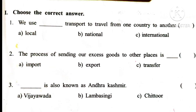Assessment 8, Roman number 1: Choose the correct answer. Question number 1: We use dash transport to travel from one country to another. Answer: Option C — International. Question number 2: The process of sending our excess goods to other places is dash. Answer: Option B — Export. Question number 3: Dash is also known as Andhra Kashmir. Answer: Option B — Lambasinghi.